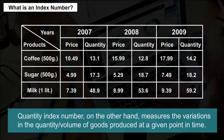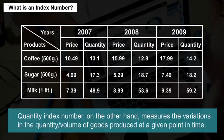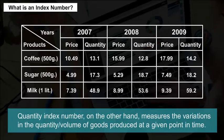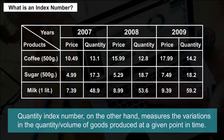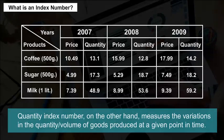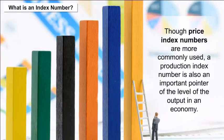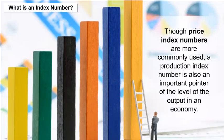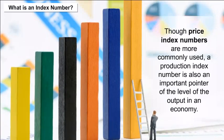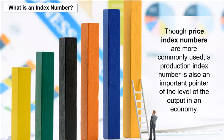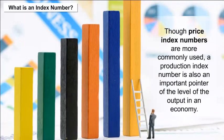A quantity index number, on the other hand, measures the variations in the quantity or volume of goods produced at a given point in time. Though price index numbers are more commonly used, a production index number is also an important pointer of the level of output in an economy.